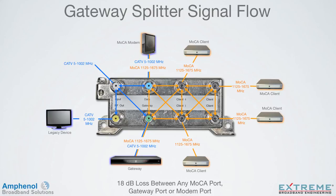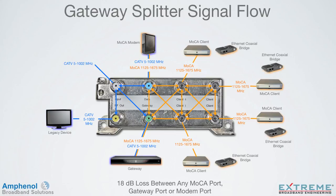The gateway splitter only passes MOCA frequencies to these devices, so the loss between any MOCA device is only 18 dB, providing excellent MOCA communication. The MOCA port can also be used for any dedicated MOCA device, such as an Ethernet coaxial bridge. Since the input and RF output ports are isolated from the MOCA frequencies, there's no need for an external MOCA point of entry filter.